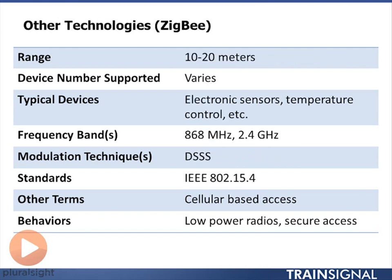Before focusing on wireless LANs, I want to share an example of another technology — Zigbee, a wireless personal area network standard. The Zigbee standard is defined by the Zigbee Alliance, but it's also incorporated into the 802.15 standards group as 802.15.4. Zigbee is used for a lot of sensing equipment — for instance, you can have a home controller with different devices connected wirelessly in your home using the Zigbee standard. It's an example of a technology that operates in the same frequency as wireless LANs and must co-exist with them, but is very different in nature.